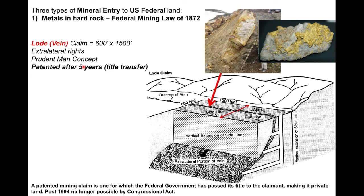In 1872, when the law was enacted, it allowed for individual claims after five years to become patented. If you filed a claim and started mining, after five years you could apply to the federal government for a patent, and they would literally transfer ownership — the title — of the land to you. You would then own that land in perpetuity. This was written into the Mining Law of 1872 as a way to incentivize immigration and westward expansion.